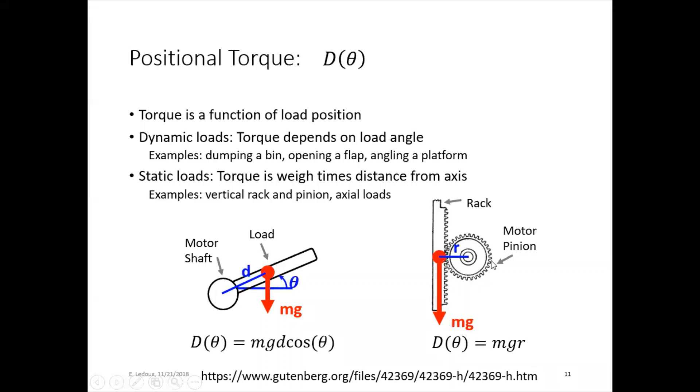So rack will move vertically and the pinion will spin. So in this case, we're just going to have force times distance, so mass gravity times r. Where r is the distance from the center of the motor to the load.